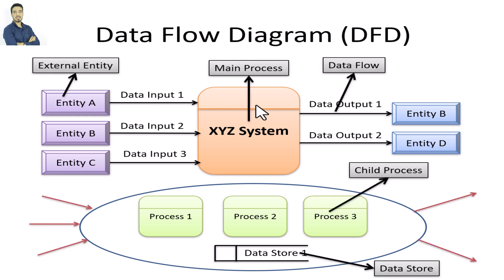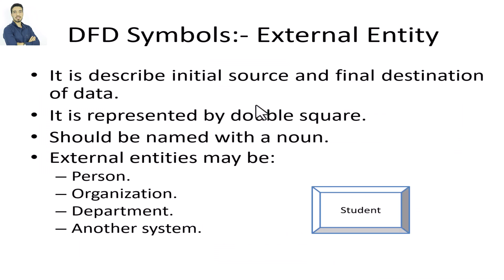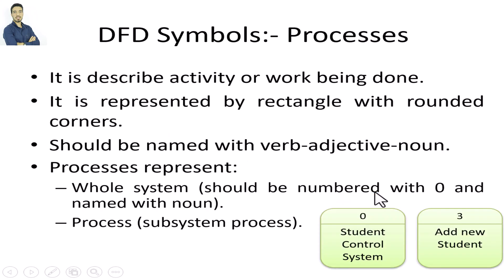Let's learn more about DFD components. First, the external entity has the shape of a double square or double rectangle. Second, the process has the shape of a rounded rectangle, and includes the process number.